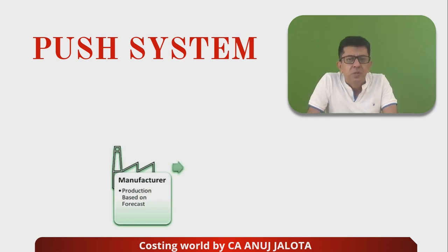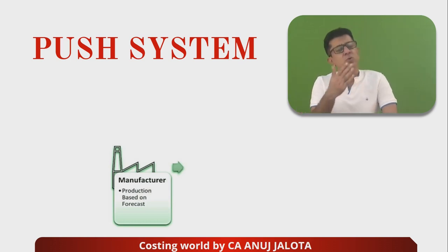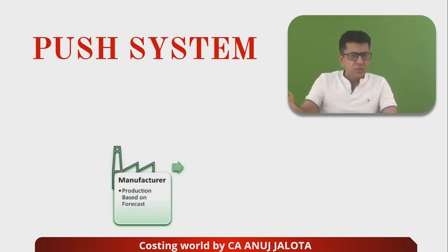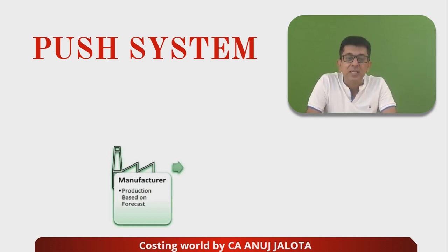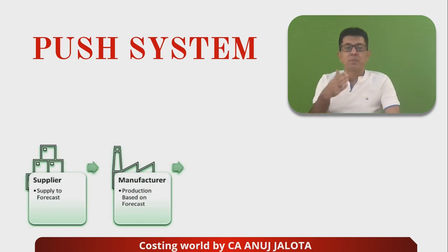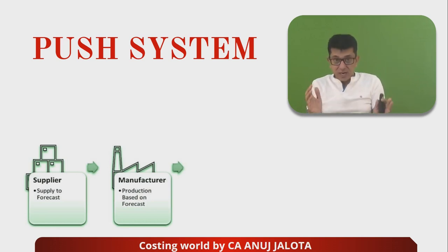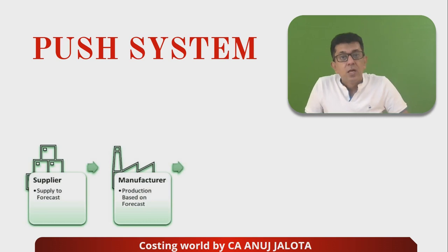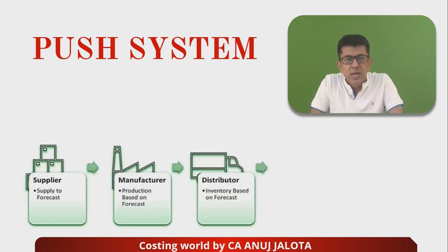The manufacturer thinks that this year these many goods should be produced because the demand will be this much. So the manufacturer produces goods based upon his estimates. For example, a company like Apple follows a push system — they approximately know what the demand will be in a year based upon previous models. They can forecast demand for iPhone 16, and based upon this they know how much raw material they need to purchase. This raw material will be supplied by their suppliers.